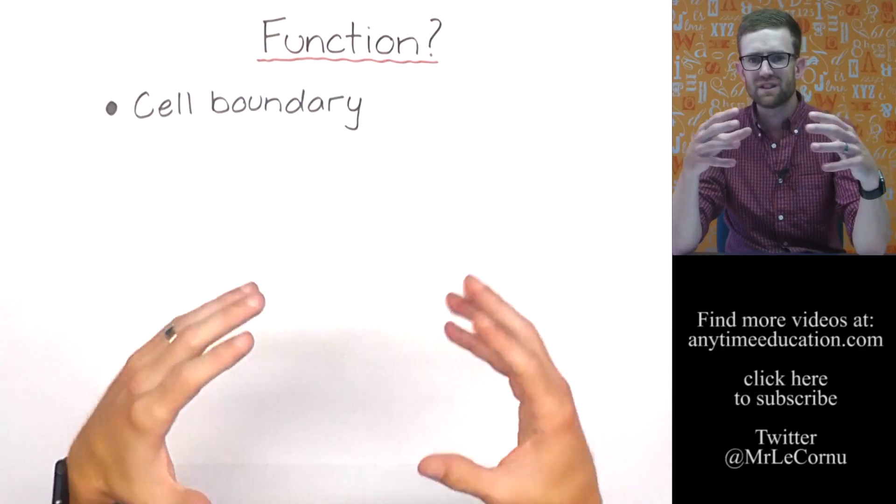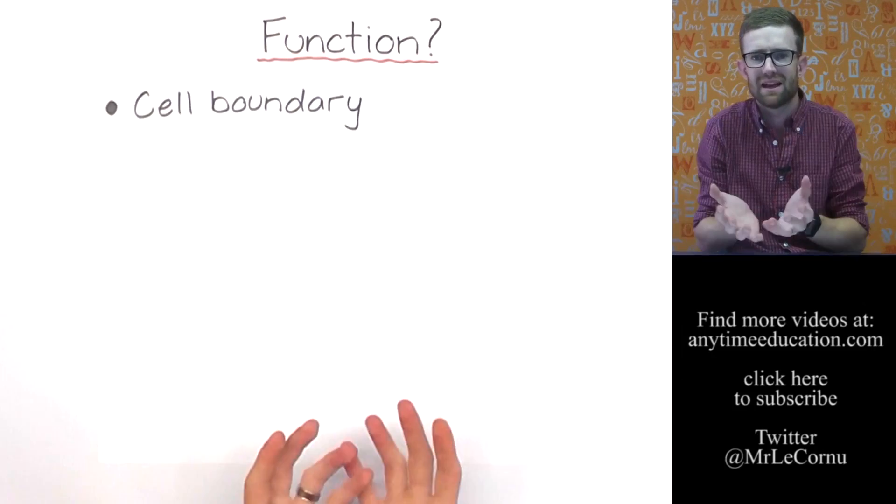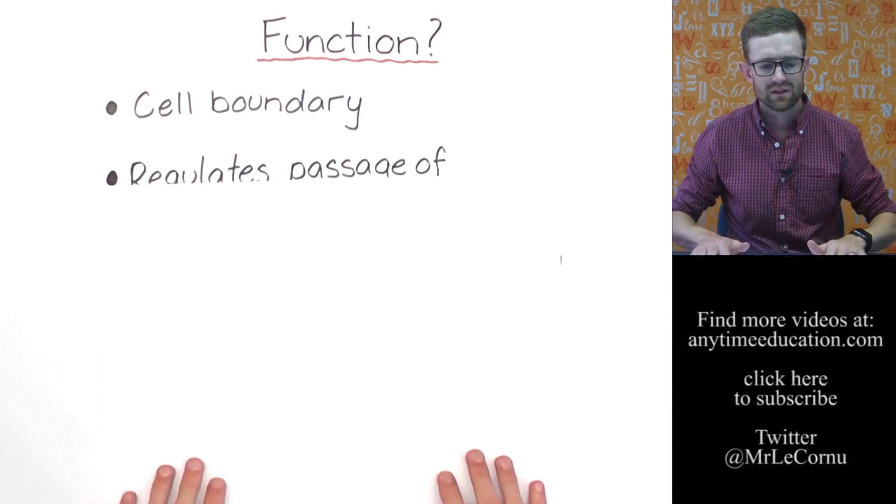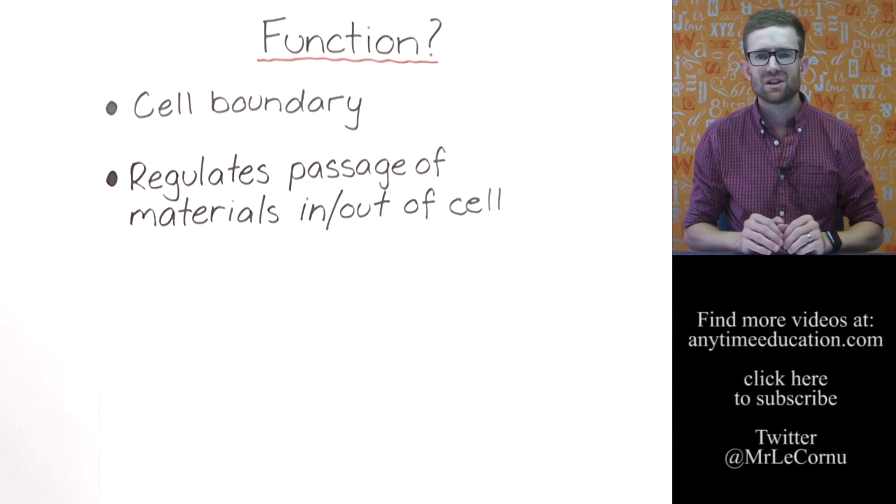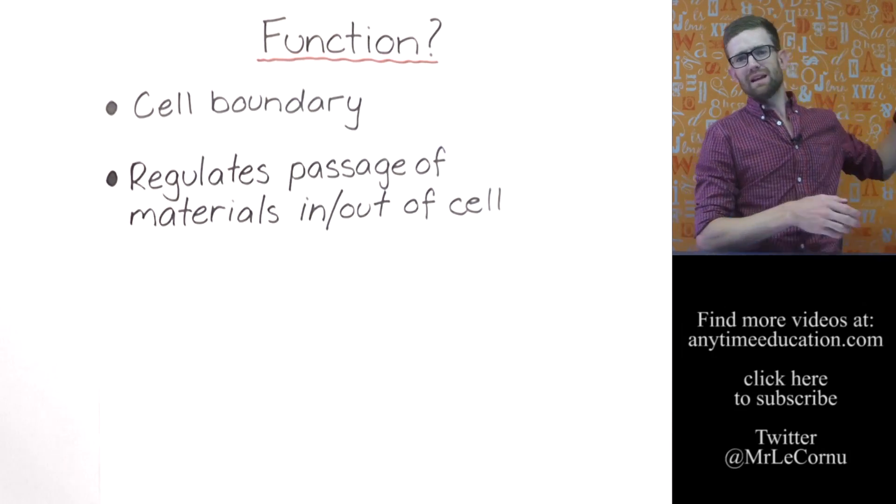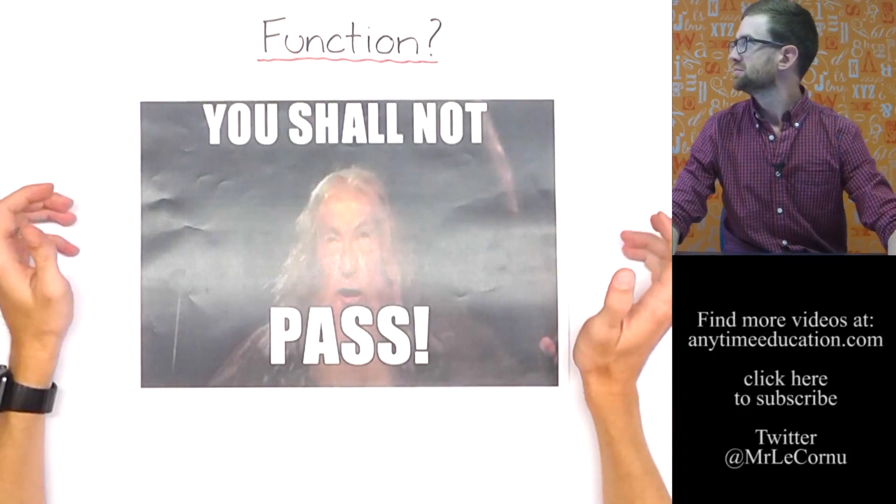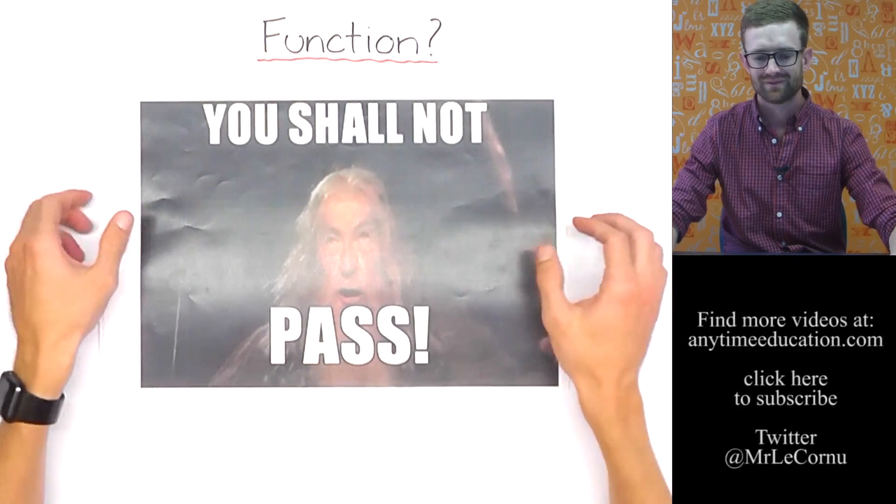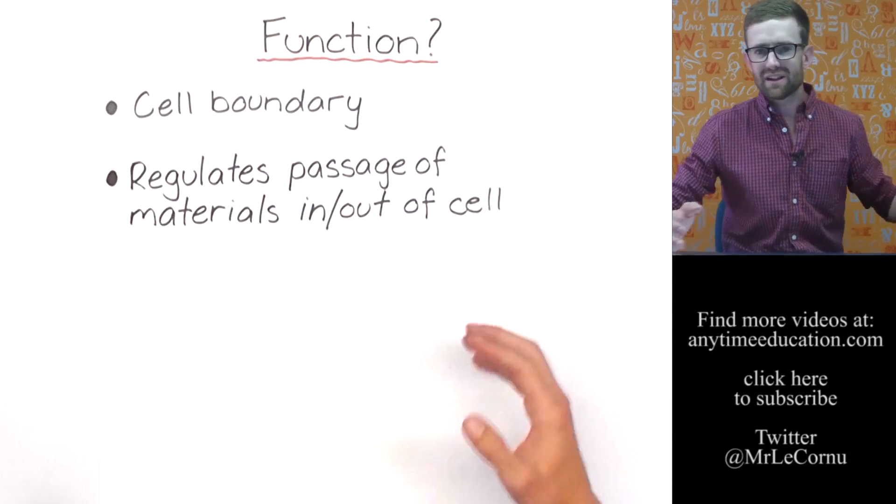It has a way of differentiating where the cell is and where the cell is not. If we didn't have a boundary around the outside of the cell, there would be no cell. So that's an important function. Secondly, the cell membrane regulates the passage of materials into and out of the cell. The cell membrane is responsible for controlling this. You shall not pass, weird.